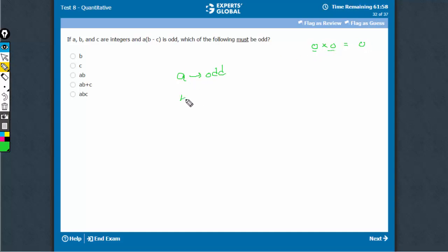Therefore, A has to be odd, and B-C has to be odd. If B-C is odd, then out of B and C, one has to be even and the other odd. So either B is even and C is odd, or B is odd and C is even.